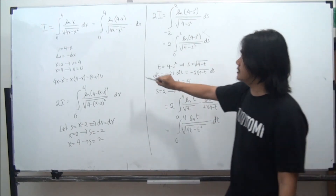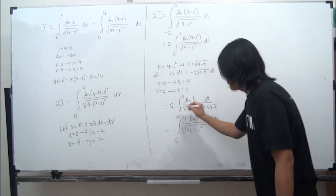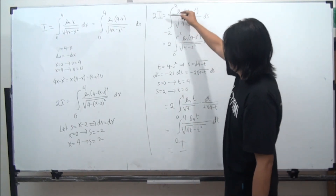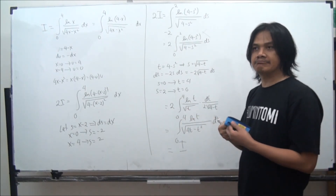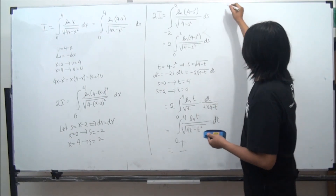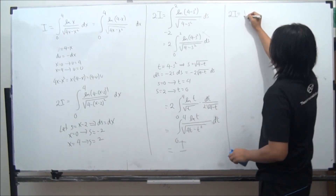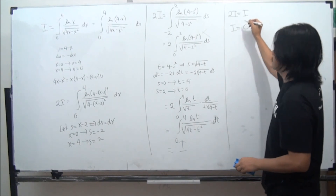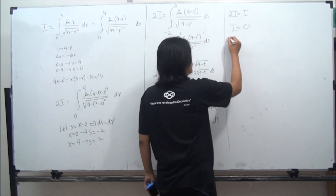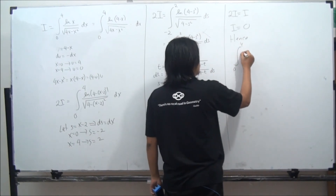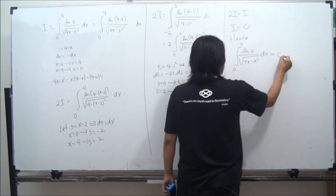This is exactly i. So magically we have this whole thing equal to i. But this i is equal to twice of i — so what can we conclude? If twice of i equals i, we can subtract both sides: twice of i equals i means i equals 0. Therefore we conclude that the original integral — the integral from 0 to 4 of the natural log of x divided by the square root of 4x minus x squared, dx — is exactly equal to 0.